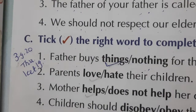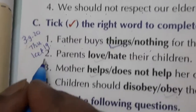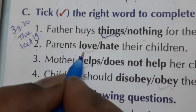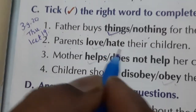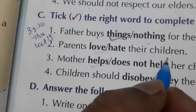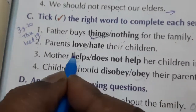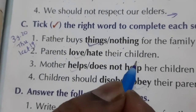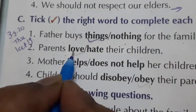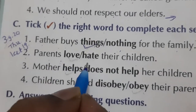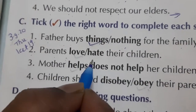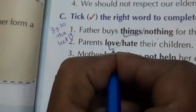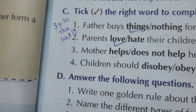Now, number 2: Parents love or hate their children. Matlab, parent — do they love or hate? Love means pyaar karte hain, hate means nafrat karte hain. So love is the correct word here.